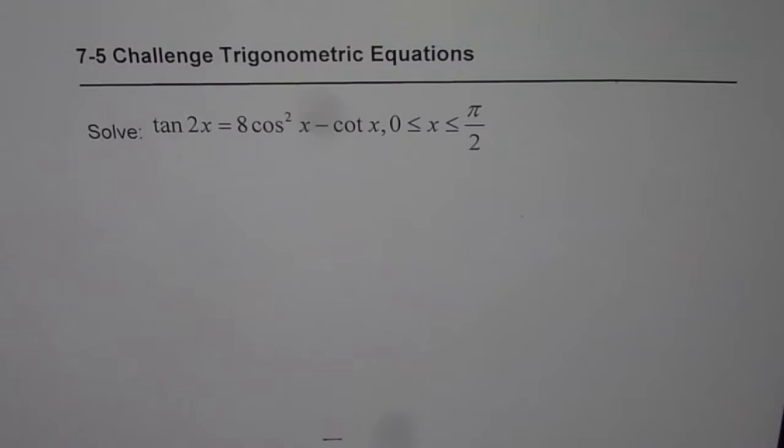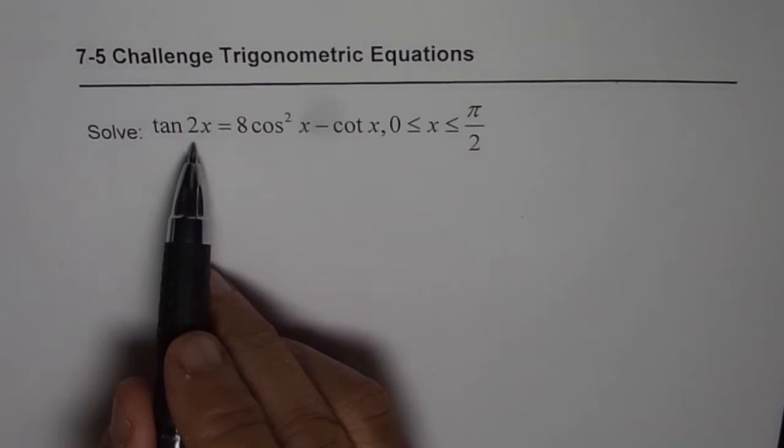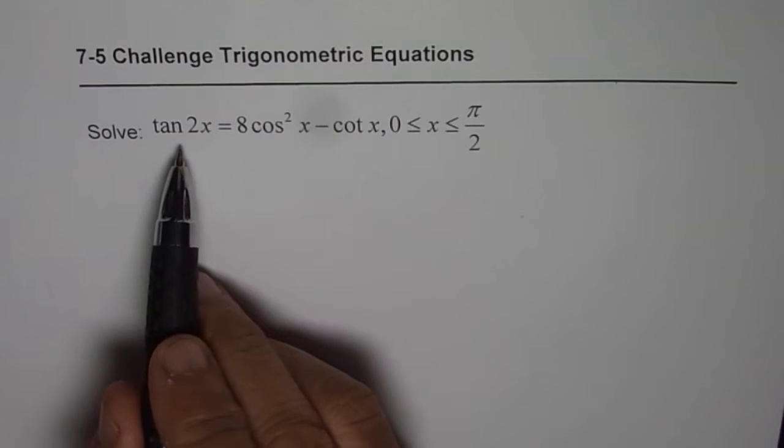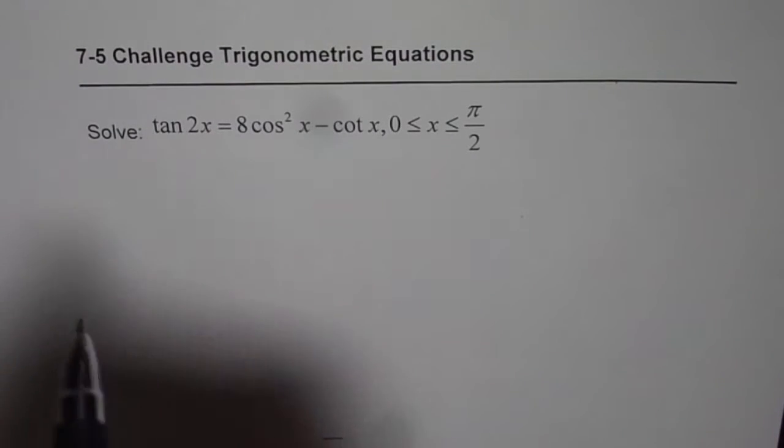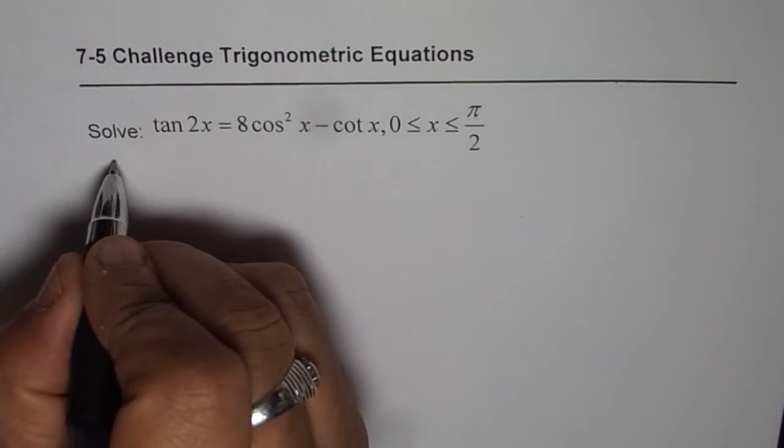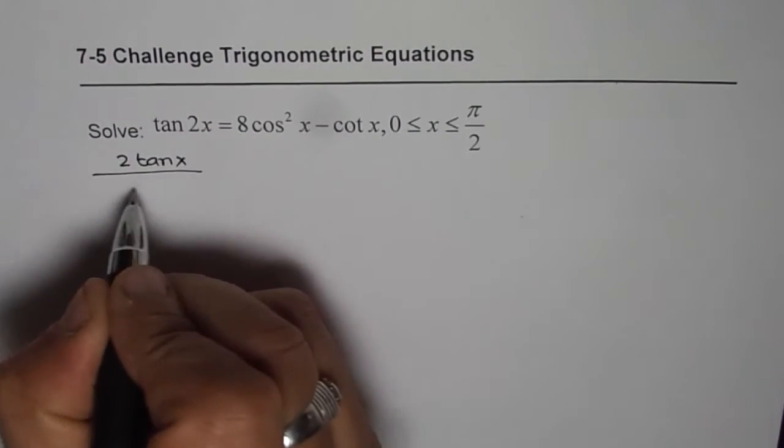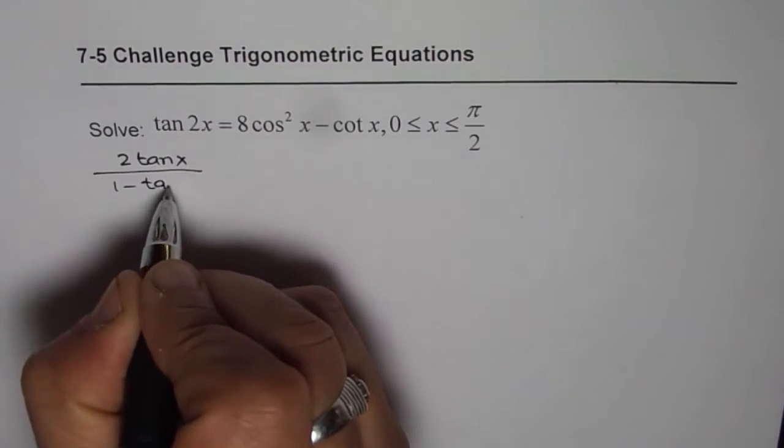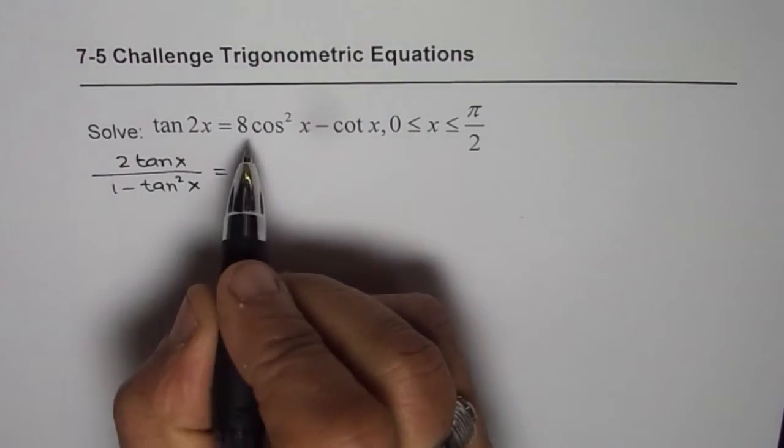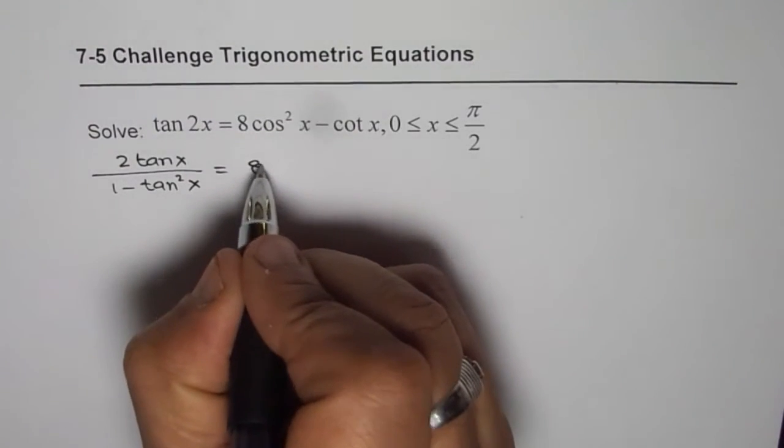While sharing the solution of this question with you, tan 2x - we'll start from the left side - is actually equal to 2 tan x. Let me write tan 2x as 2 tan x over 1 minus tan square x. Now on the right side I'll just copy as such, 8 cos square x minus cot x.